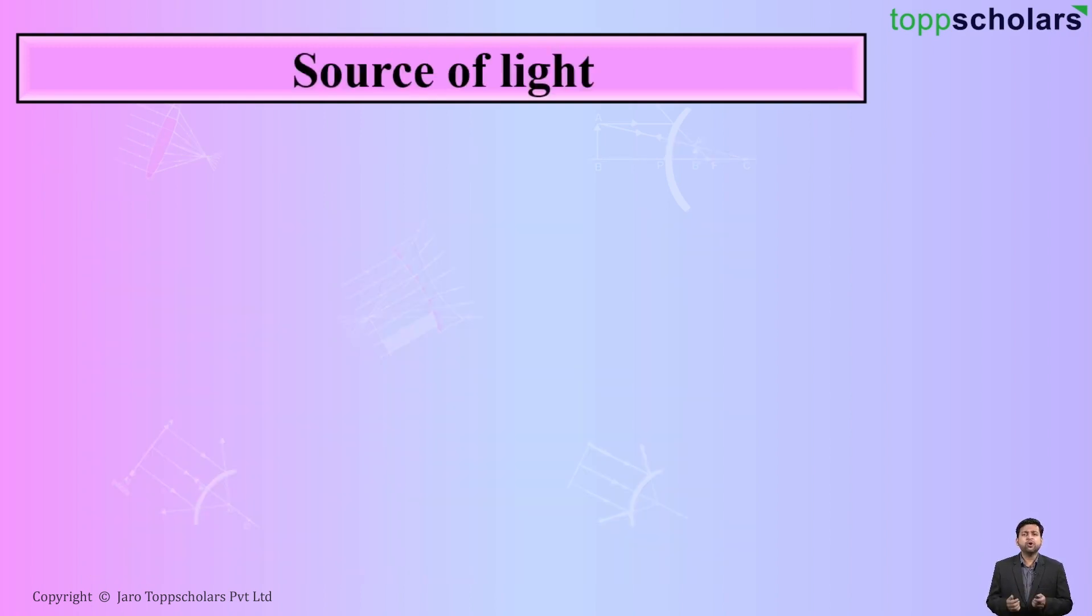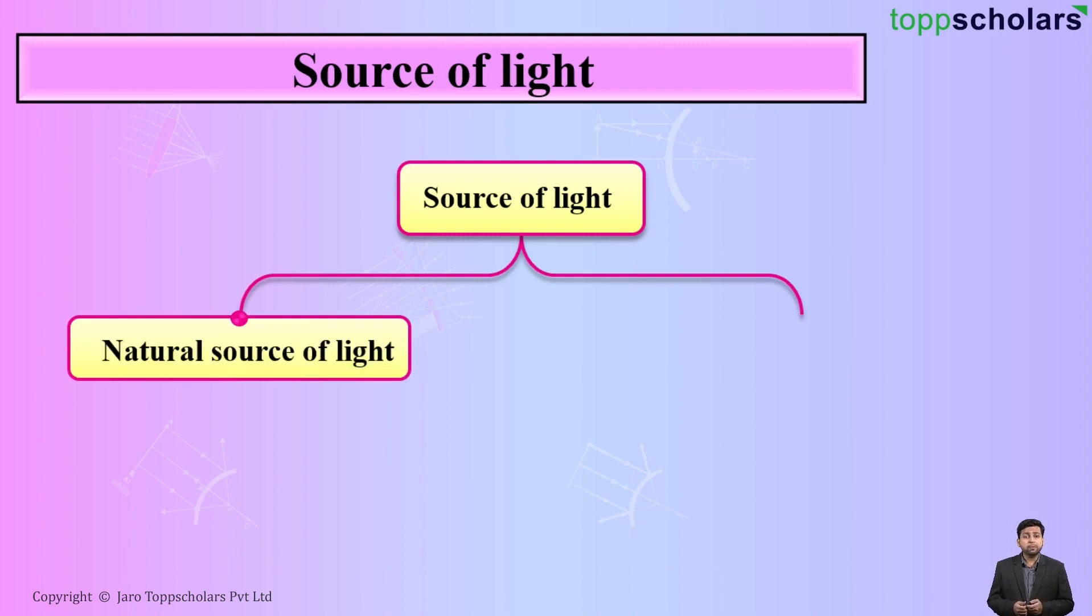Now student, let us move on to your next topic and that is source of light. Source of light, exactly there are two types. The first type will be natural source of light and the second type will be the artificial source of light.